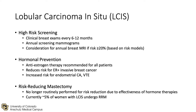Patients with LCIS should have high-risk screening with clinical breast exams every 6 to 12 months and annual screening mammograms. There should be consideration for annual screening MRI if the risk is greater than 20% based on risk models. Hormonal prevention is indicated in all patients and reduces the risk for ER-positive breast cancer. Risk-reducing mastectomy is no longer routinely performed due to the effectiveness of hormone therapies, but currently about 5% of women still undergo risk-reducing mastectomies.